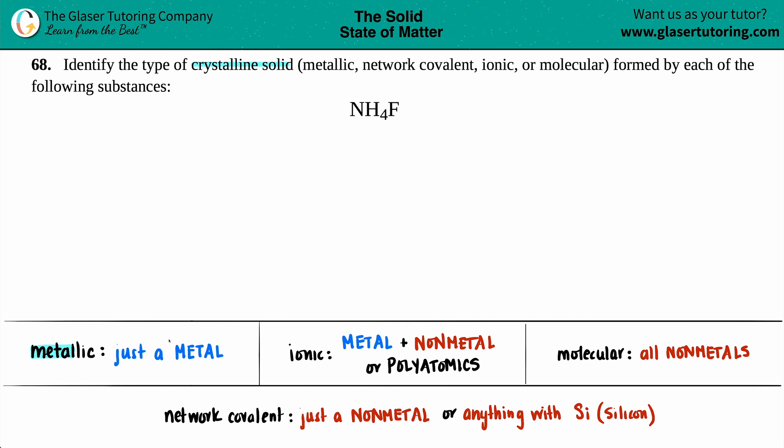A metallic crystalline solid, you would just see a single metal. For example, you would see copper (Cu) - that would be a metallic crystalline solid - or just iron (Fe). But here, I don't have any metals. Nitrogen, hydrogen, and fluorine are all non-metals, so it can't possibly be metallic.